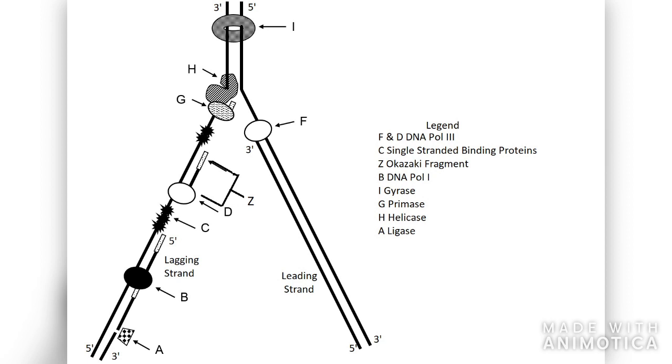Up at the very top, you see letter I. This is gyrase. Gyrase binds ahead of the replication fork and unwinds any supercoiling in the DNA. This allows your replication fork to open and continue smoothly.